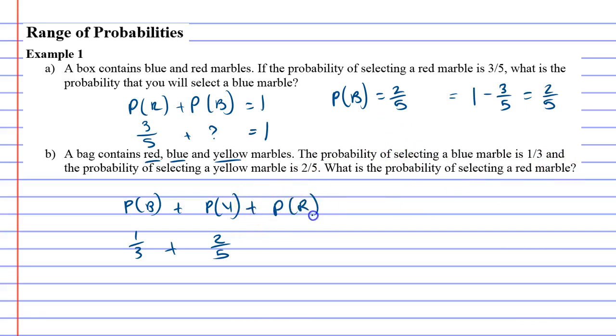Probability of red, we don't know. But we do know that when you add up all the probabilities, it should equal 1.